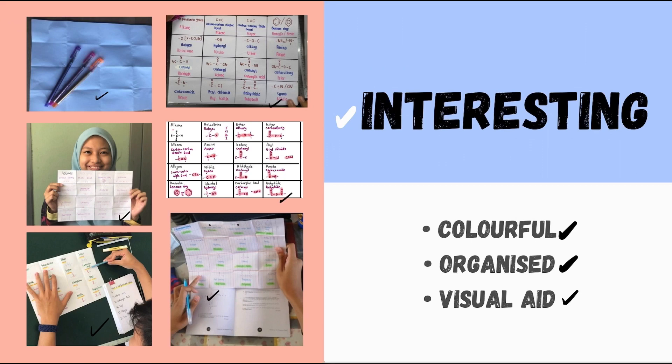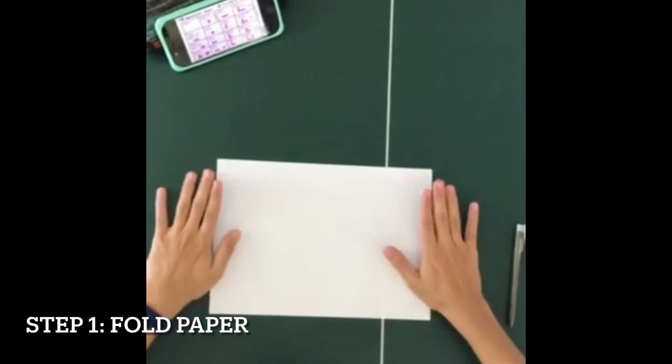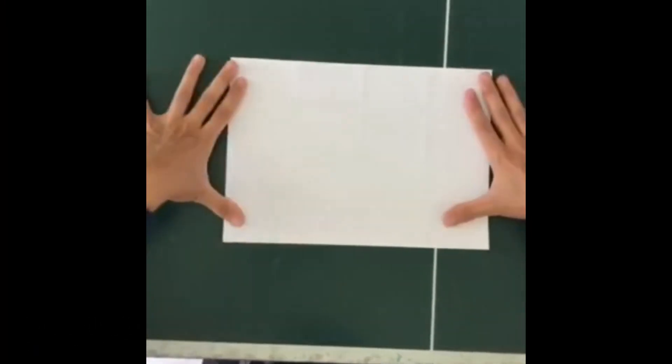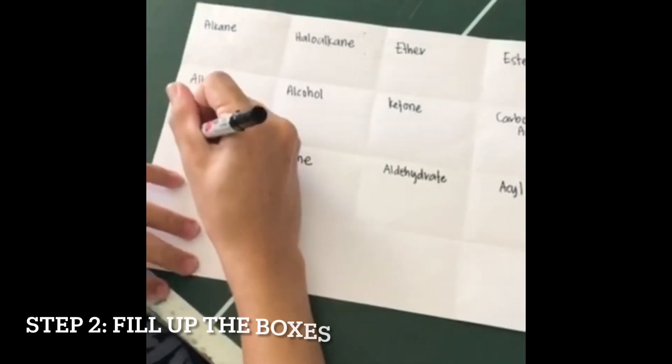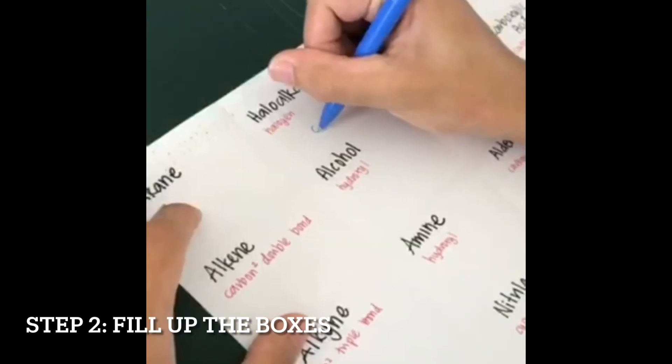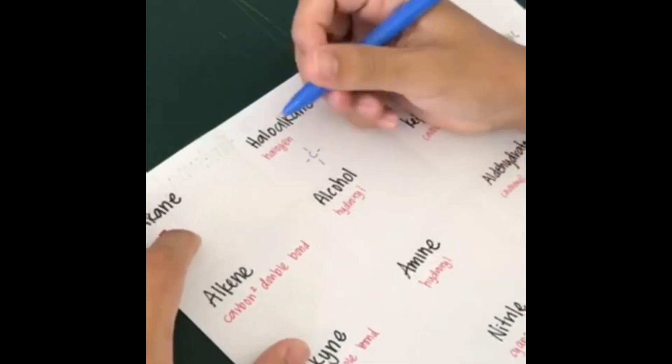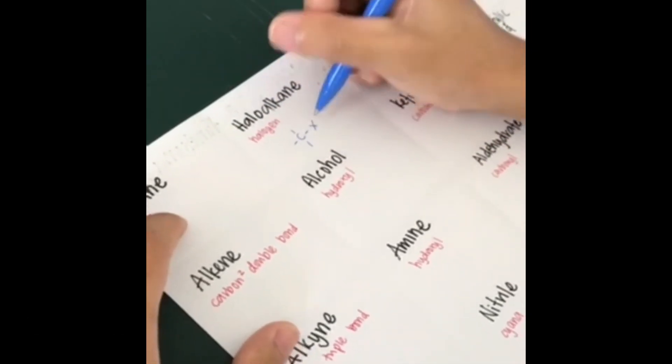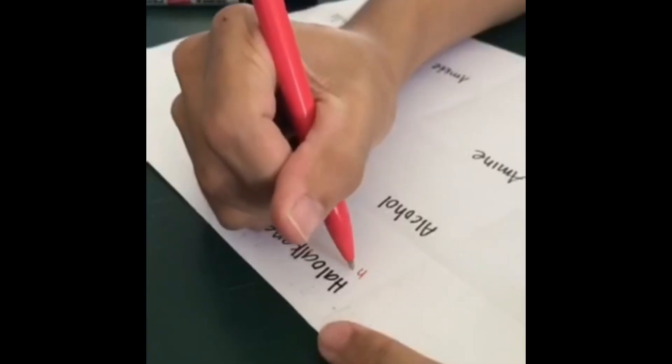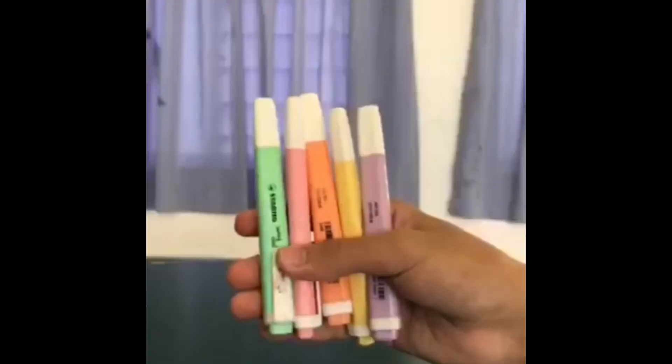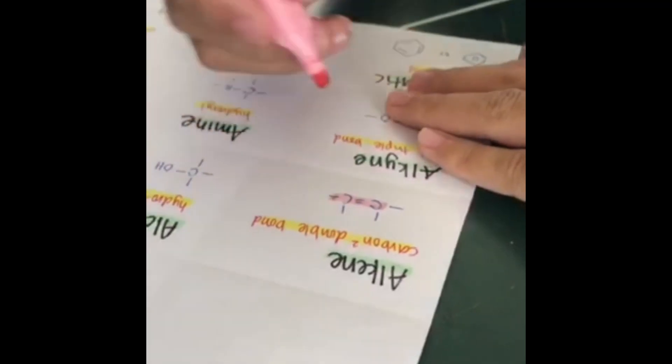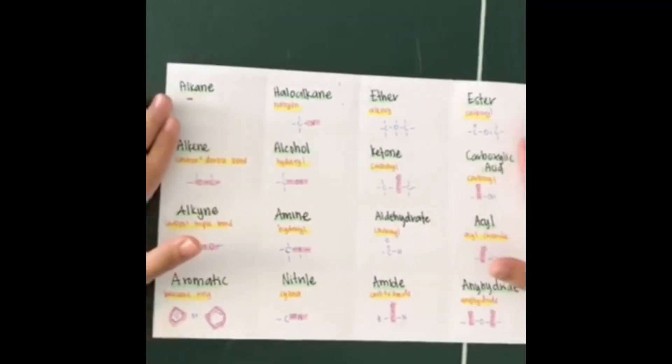Now let's have a look at some videos of how students prepare their own F3R model. The first step is you have to fold a piece of blank paper into 16 boxes. Next, you can fill up the boxes with functional groups, homologous series, and the structure of functional groups using three different colors. You can make it even more interesting by using highlighters as you like, depending on the creativity of the students. And ta-da, your F3R model is ready to be used.